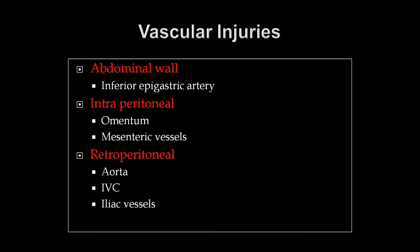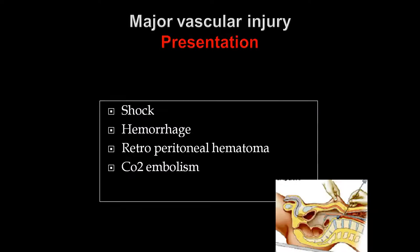The various types of vascular injuries one may encounter during laparoscopy include injury to abdominal wall vessels like the inferior epigastric artery, damage to omental or mesenteric vessels, or more dangerously, retroperitoneal hematoma due to injury to the aorta, IVC, or iliac vessels. Major vascular injury — whether from Veress needle or trocar — causes the patient to become immediately hypotensive and pale, with a large retroperitoneal hemorrhage or hematoma, or may present as carbon dioxide embolism. We should be very vigilant and swift in action once we recognize this drastic complication.